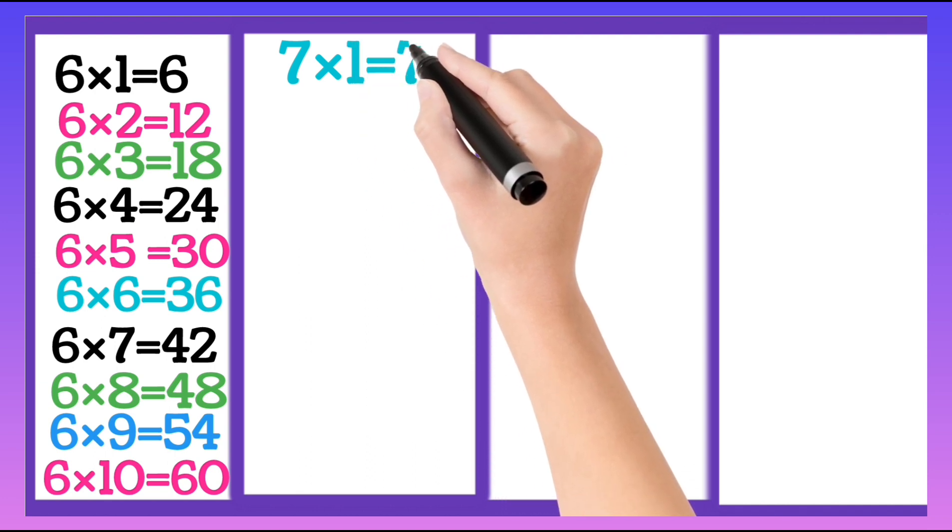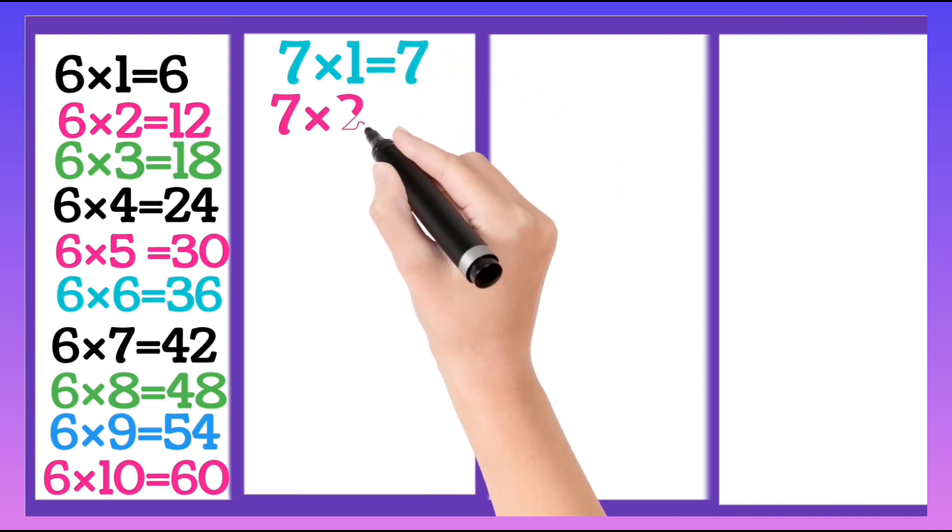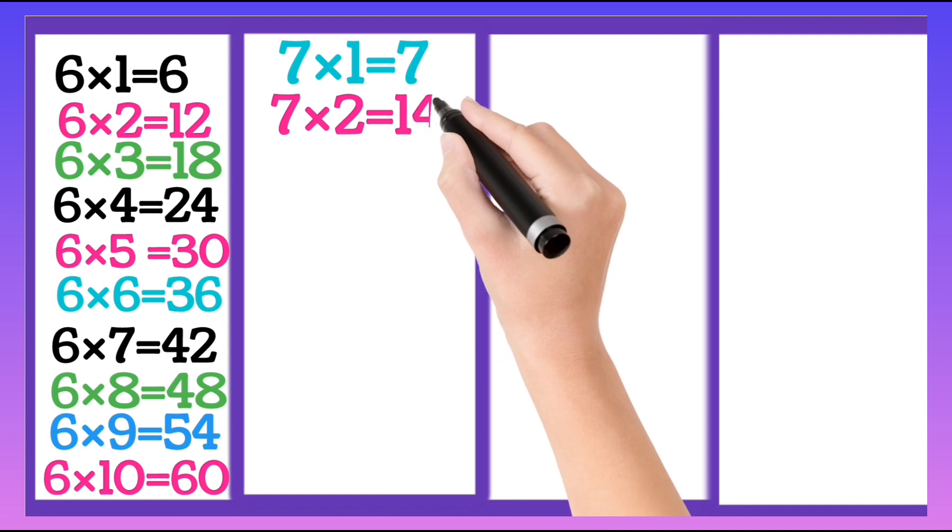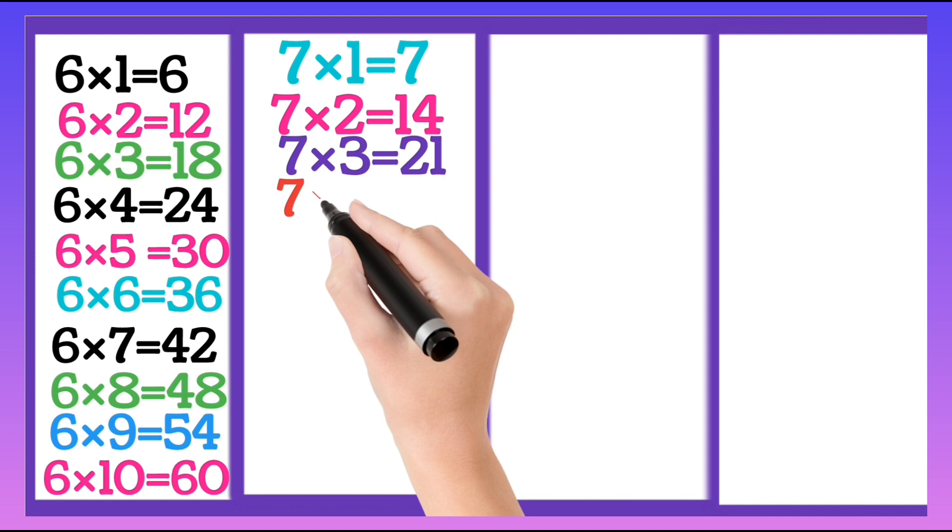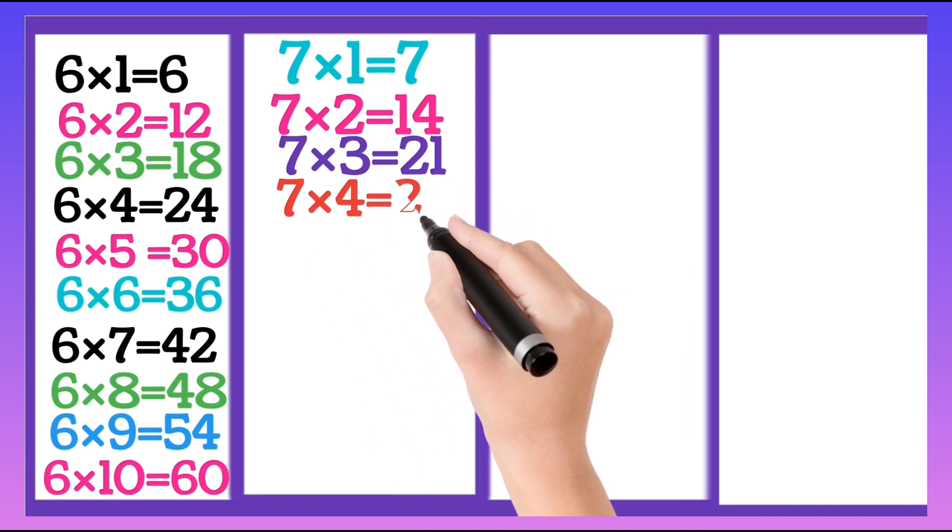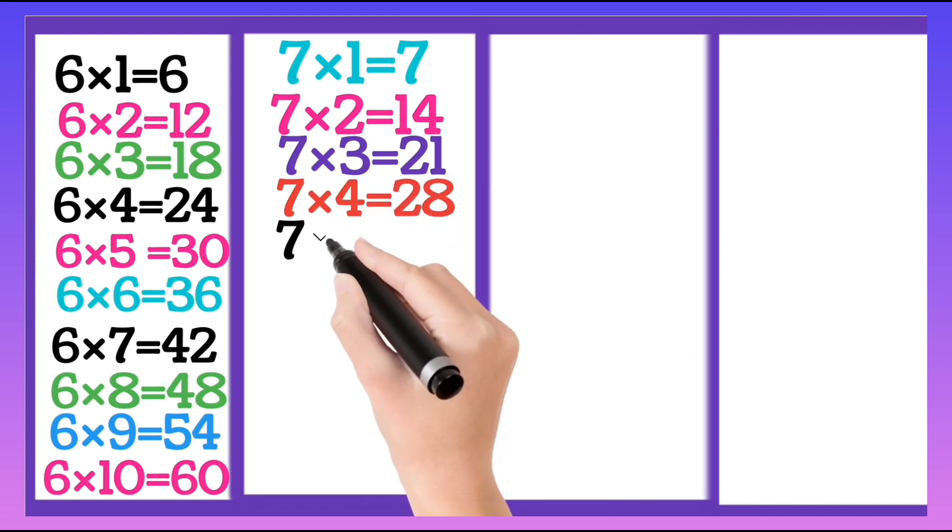7 ones are 7, 7 twos are 14, 7 threes are 21, 7 fours are 28.